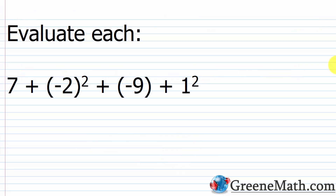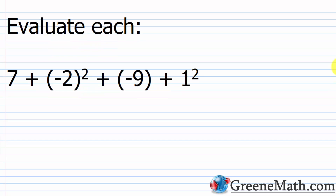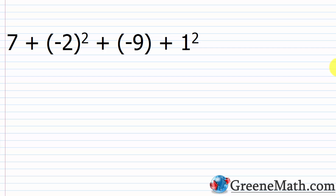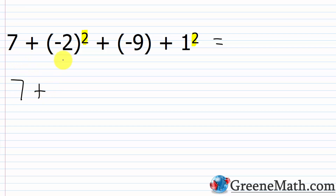Let's evaluate our first expression: 7 + (-2)² + (-9) + 1². There are no parentheses or brackets, so we go to our next highest priority: exponent operations. We have exponents here and here. Negative two squared — we have parentheses around the base, so both the negative and the two are squared. Negative two squared is negative two times negative two, which is four. So we replace it: 7 + 4 + (-9) + 1².